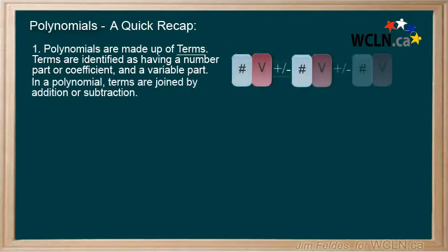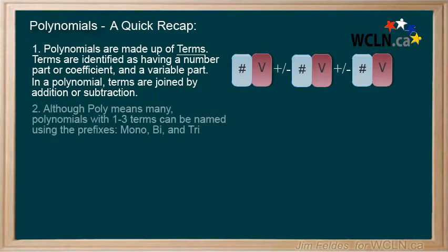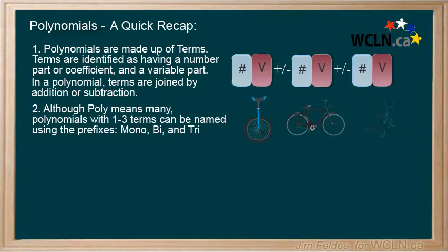In a polynomial, terms are joined by addition or subtraction. Although poly means many, polynomials with one to three terms can be named using the prefixes mono, bi, or tri.